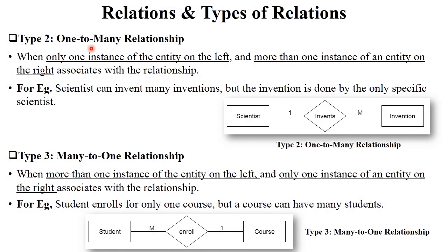The next type is one-to-many relationship. There is one instance on the left side and multiple instances of an entity on the right side. For example, a scientist can invent multiple inventions, but those inventions are done by only that specific scientist. So scientists can invent multiple inventions — this is called a one-to-many relationship.